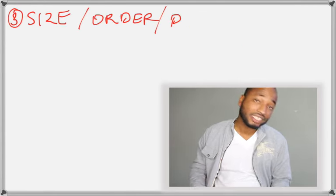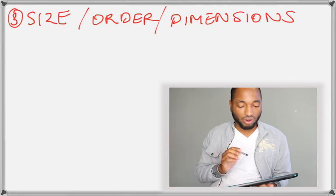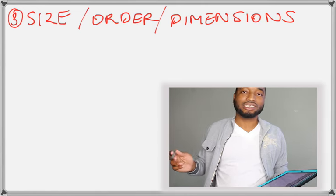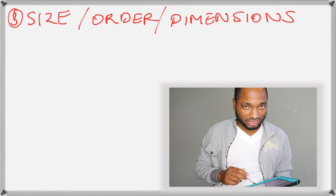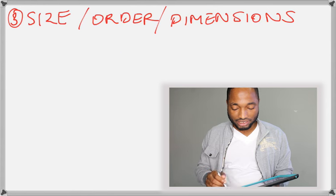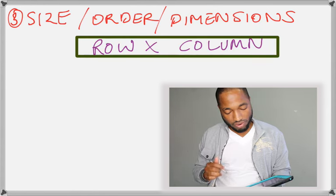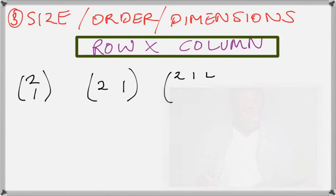So first thing a teacher may talk to you in matrices about is this guy. Size, order, dimension. Whatever part of the world you're learning this in, you may have a different name, provided you're doing it in English. Size, order, dimension. But they all mean the same thing. They mean the amount of rows in a matrix by the amount of columns. Row by columns. That multiply sign there, you can replace that with the word by.